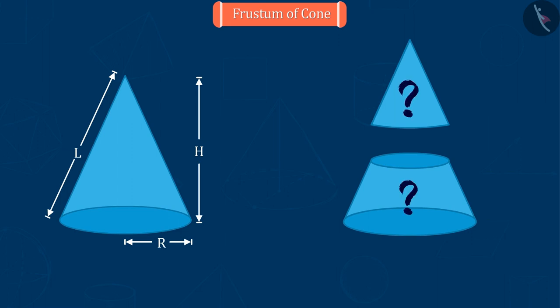So can you tell, what are these two pieces? Absolutely correct. The top piece is a cone, and the bottom piece is the frustum of the given cone, which we are going to discuss today.